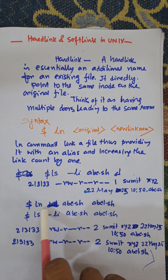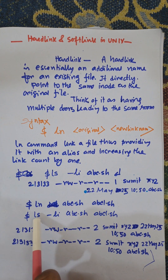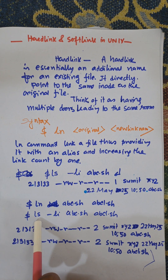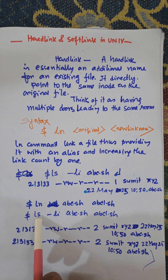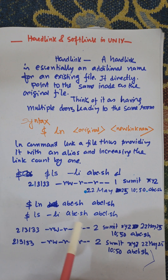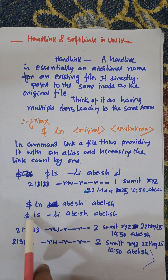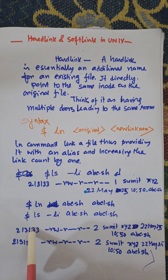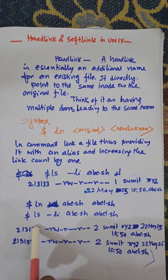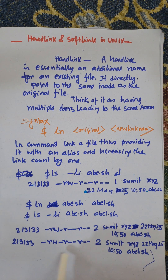This is created by the ln command. You can display the file with the help of the ls -li command. It will show the same inode number for that file, and the link count is incremented to 2.